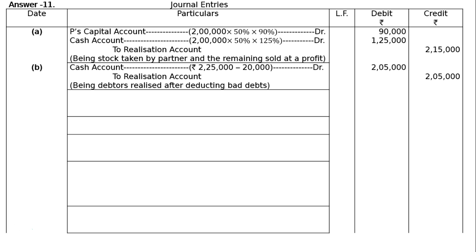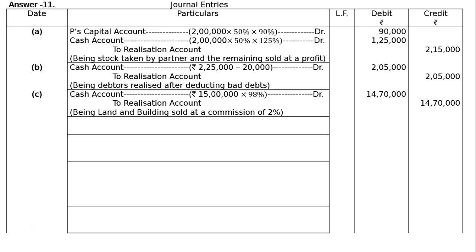Part C: land and building with book value Rs.12,50,000 was sold for Rs.15 lakhs through a broker who charged 2% commission. So 2% of Rs.15 lakhs is Rs.30,000. Cash account is debited to Realization account at 98% of Rs.15 lakhs, i.e., Rs.14,70,000, being land and building sold at a commission of 2%.